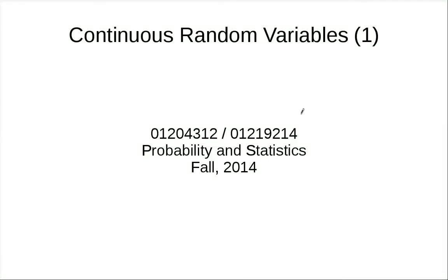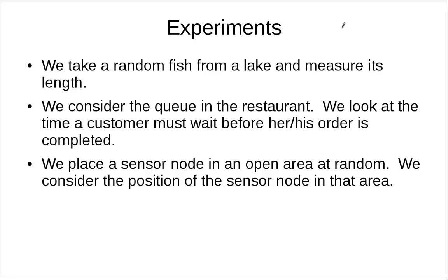In this clip we will discuss continuous random variables. Let's look at some sample experiments. In the first experiment, we take a random fish from a lake and measure its length. A fish from a lake cannot be longer than maybe five meters, but from one centimeter to five meters there are infinitely many possibilities — as many as the number of reals, which is uncountable.